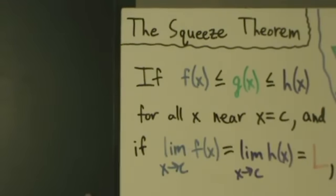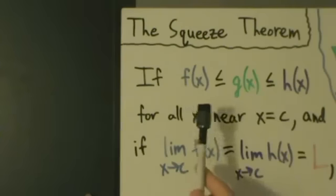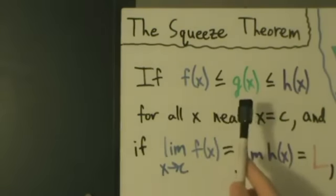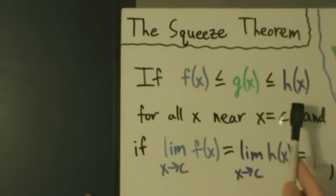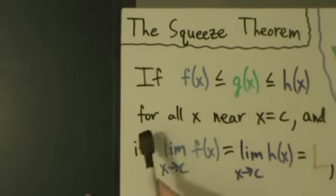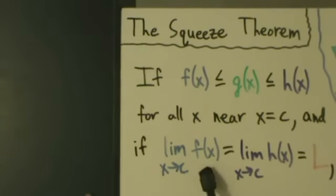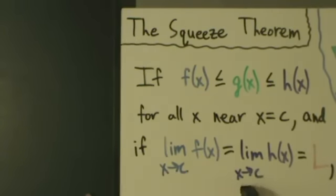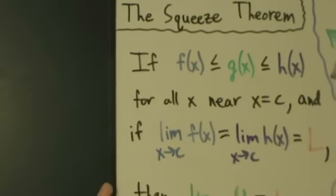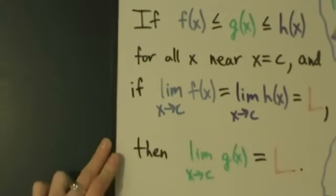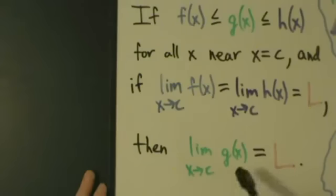So the squeeze theorem pretty much says if f(x) ≤ g(x) ≤ h(x) for all x near x = c, and if the limit as x goes to c of f(x) equals the limit as x goes to c of h(x) equals some number L, then the conclusion is that the limit as x goes to c of g(x) also equals L.